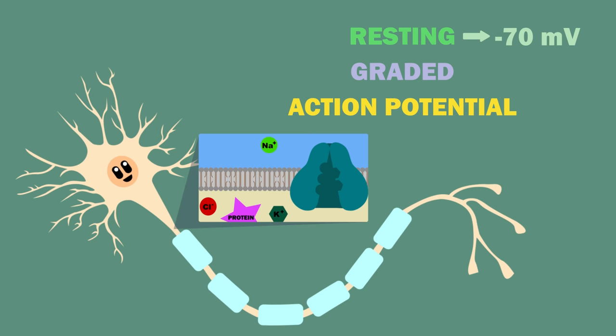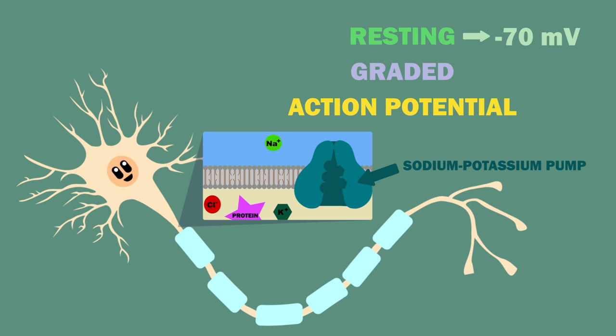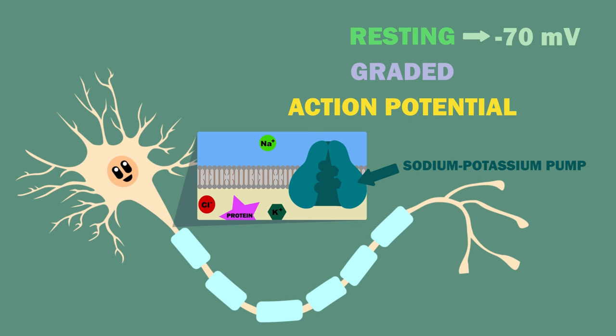The ions contributing to the charges on either side of the membrane are negatively charged proteins, negatively charged chloride, positively charged sodium, and positively charged potassium.